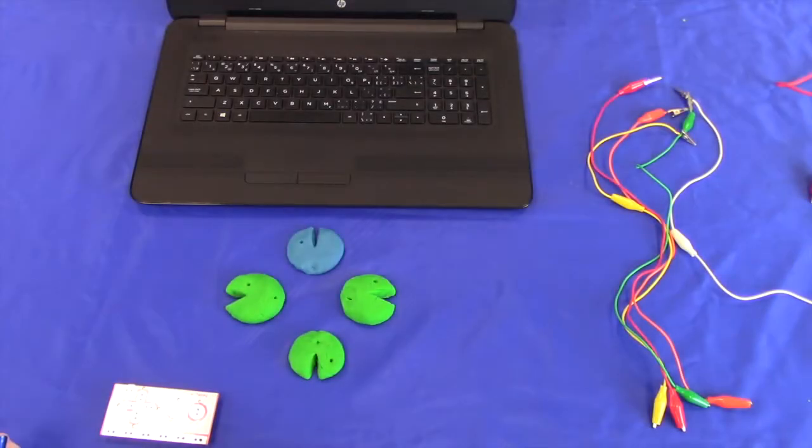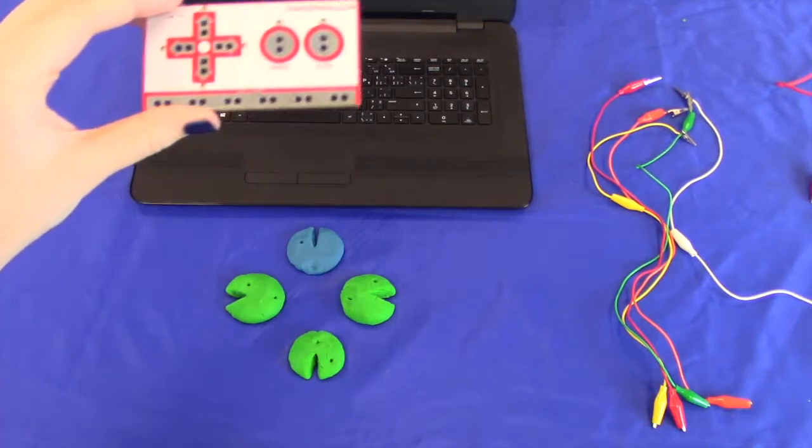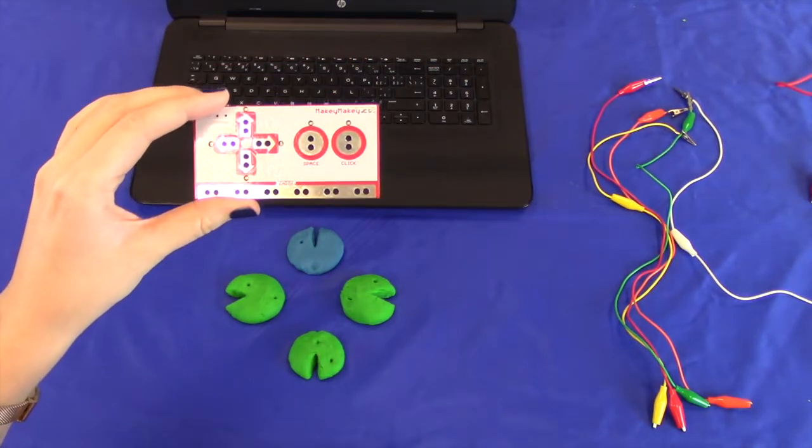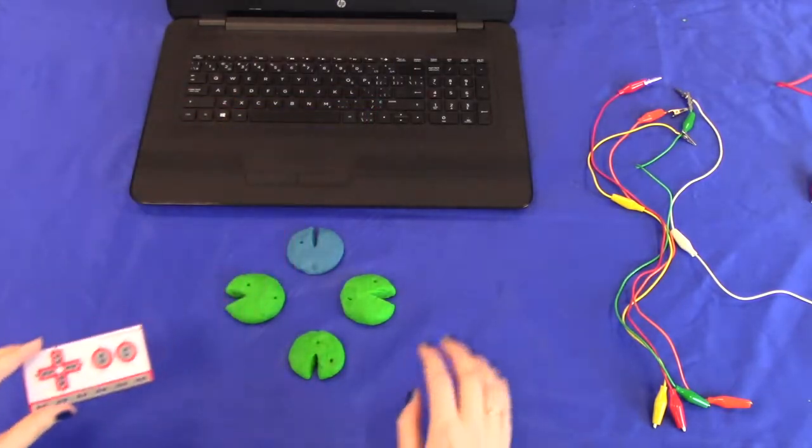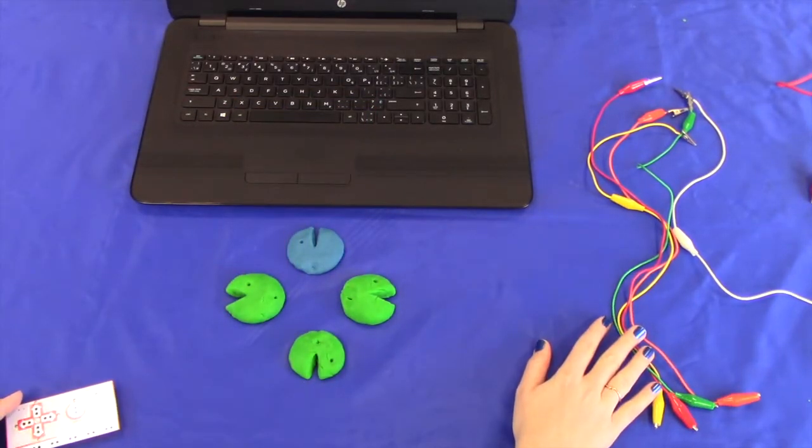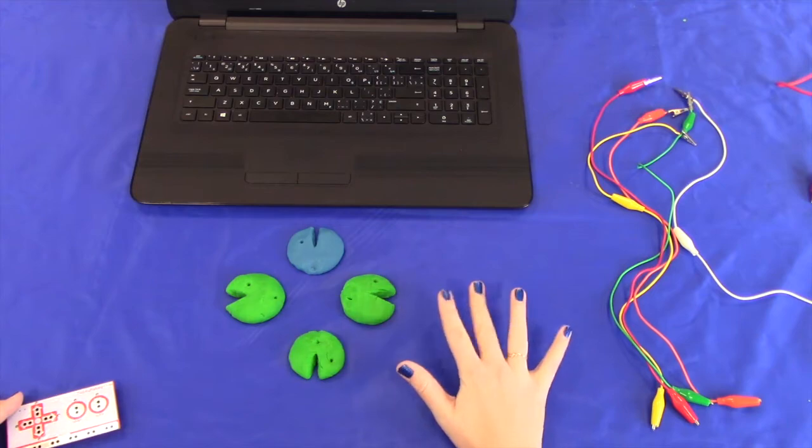For our project today, you're going to need one of our Makey Makey Discover Together kits. In this kit, you'll find a control board along with seven alligator clips. For today's video, we'll only be using five.